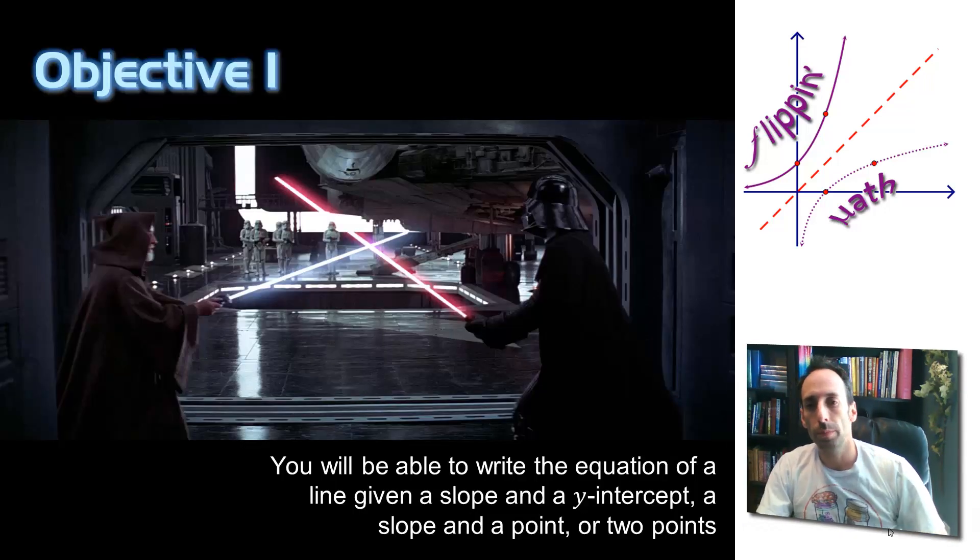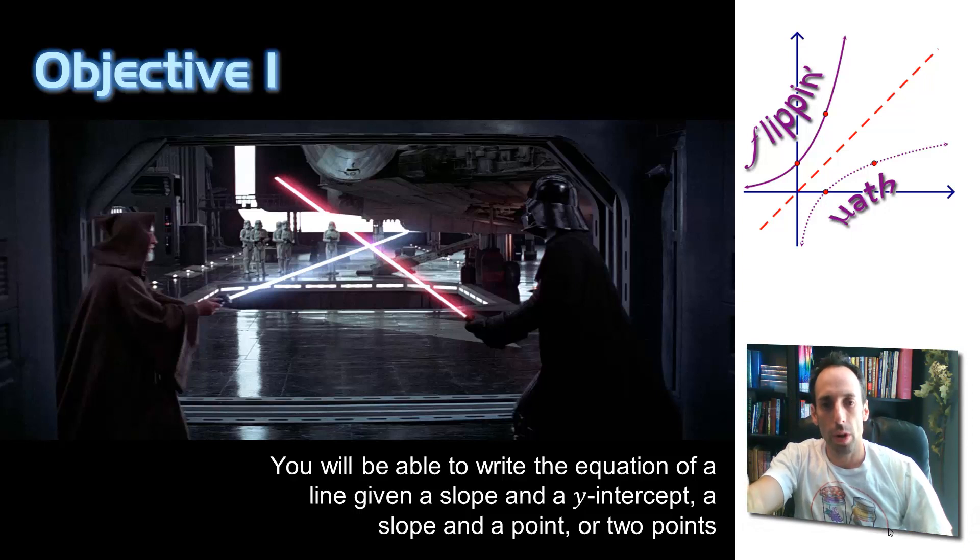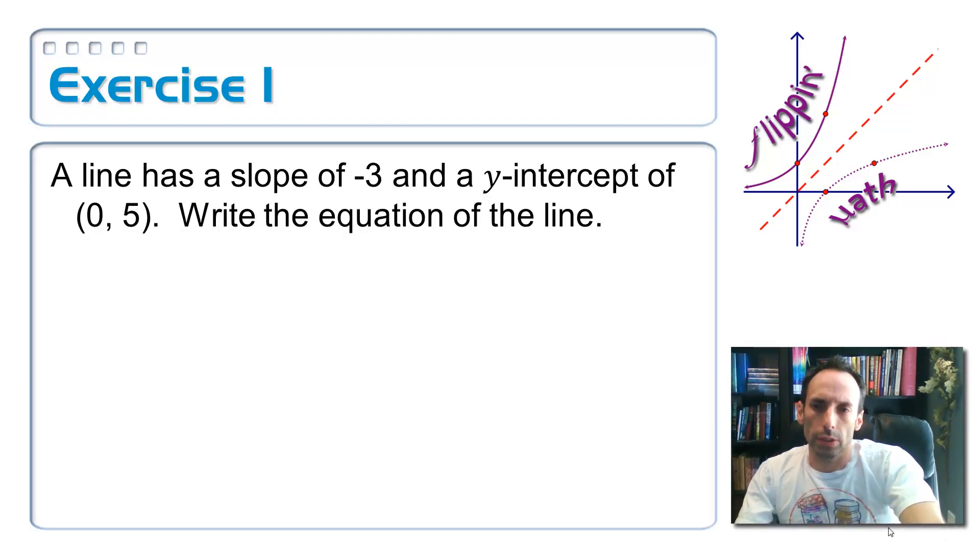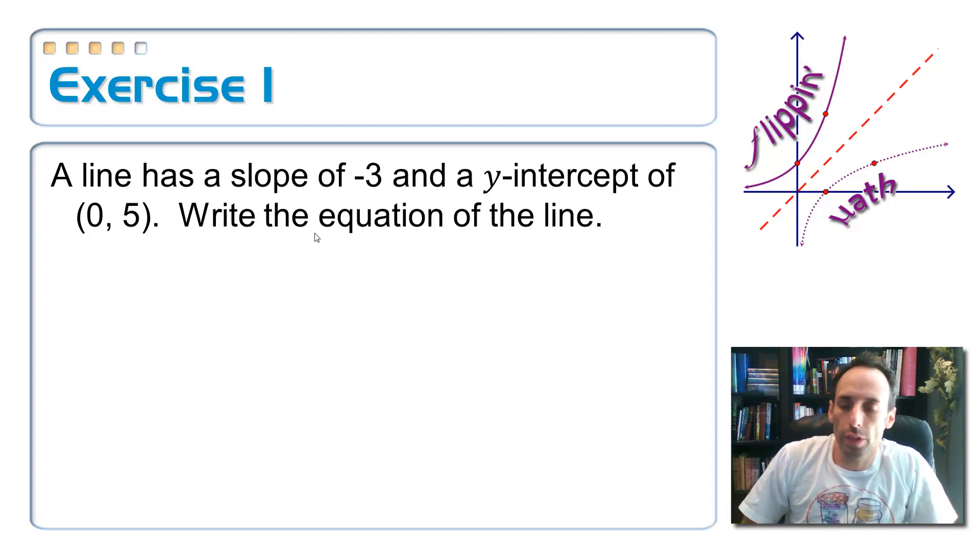So objective one here, being able to write the equation of a line given a couple of different conditions like a slope and a y-intercept, a slope and a point, or just two points. Here's our first exercise. A line has a slope of negative three and a y-intercept of zero comma five. Write the equation of the line.